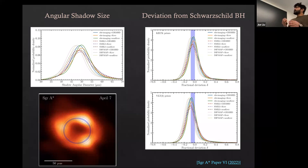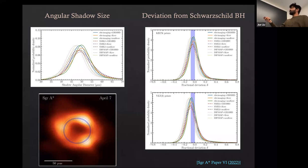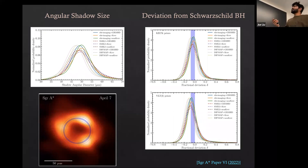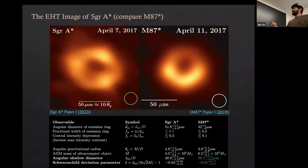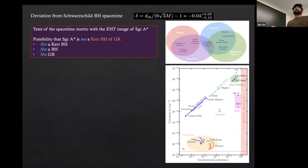Already at this point, this represents a null test of general relativity. We plot the δ parameter from this whole process, and the blue shaded region shows the fractional deviation parameter for Kerr black holes in general. If your peak were one or two sigma away from this blue shaded region, you would say that's a violation of the no-hair theorem, since we expect astrophysical black holes to be Kerr black holes. So this is already excellent.